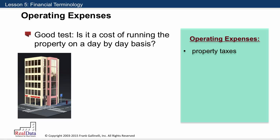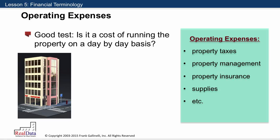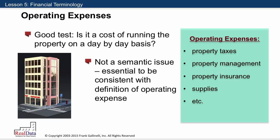Perhaps the easiest way to understand what is likely to be a legitimate operating expense versus a capital improvement is: if it's a cost of running the property on a day-by-day basis, those costs — like property taxes, property management, property insurance, supplies, and so on — are clearly operating expenses. I want to stress this is not a semantic issue. It's really quite essential that we are consistent with our use of this definition along with other investors, appraisers, and lenders, because these definitions lead to key metrics that would be skewed if we didn't stick with the same definition everyone else is using.